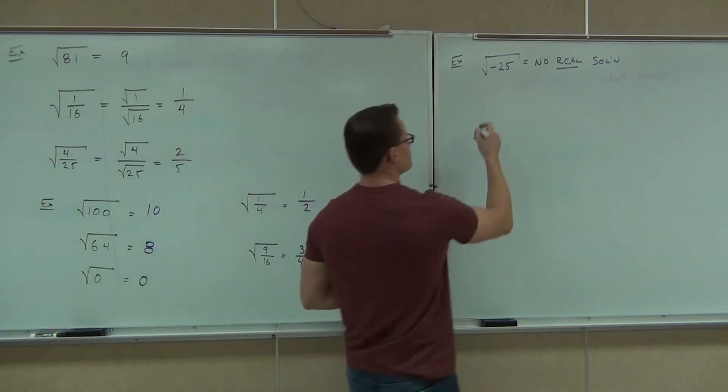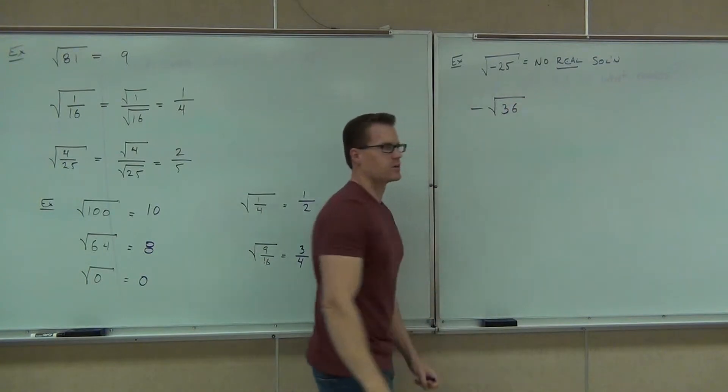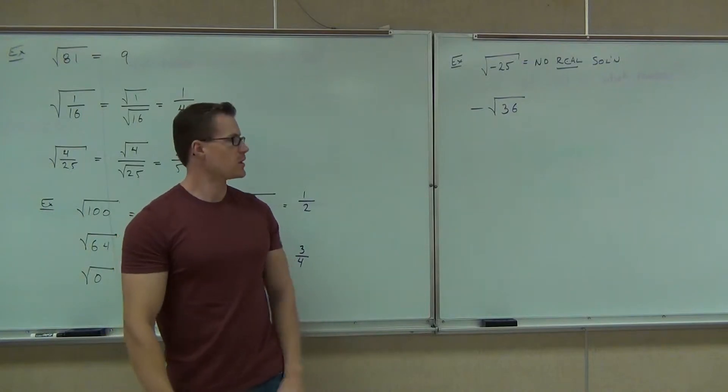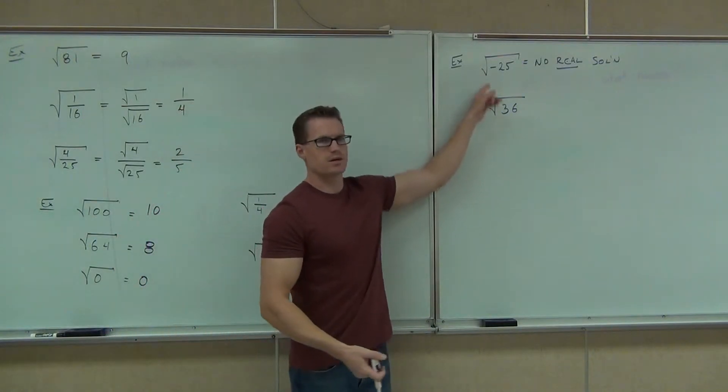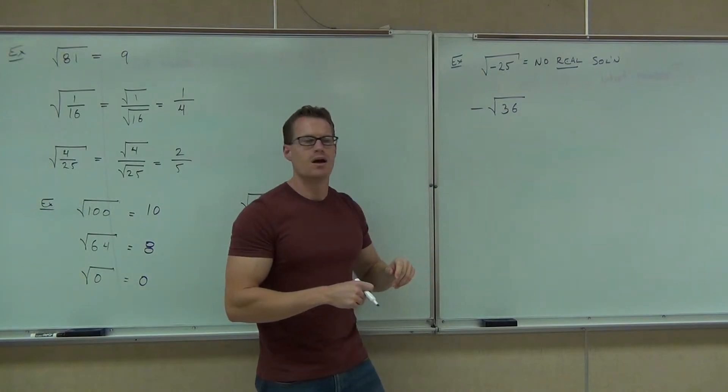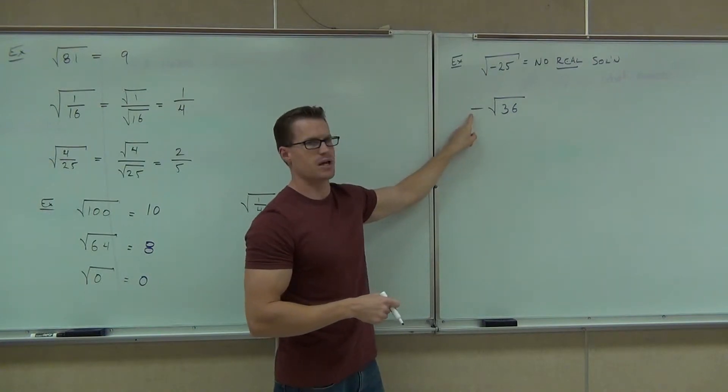Now, how about this one? Is this different than the problem we just talked about? Yes. Why? Because the negative is outside. Yeah, that's right. So what's the difference between here and here? Well, the negative is inside here. The negative is outside here. Here's what this one talks about. This says, hey, can you take the square root of 36? Yeah. How much is it? Six.